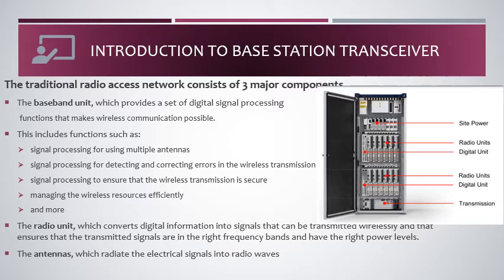Now let's talk about what happens when a mobile call is made. The call reaches the RF antenna through the air interface, and from the antenna to the base station it comes through an RF cable — radio frequency cable — and first reaches the radio unit. The radio unit is capable of converting these RF signals to digital information and passing it to the baseband unit, and also converting digital information back to RF signals.